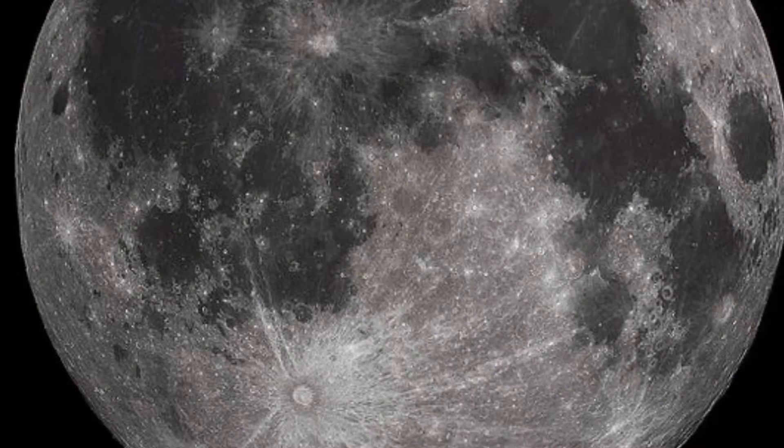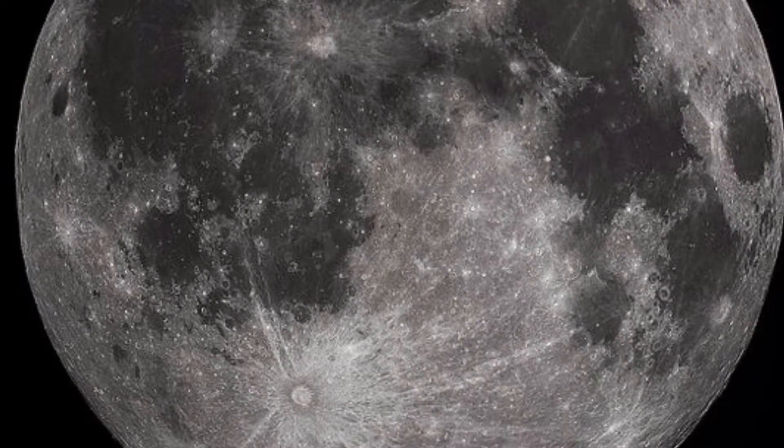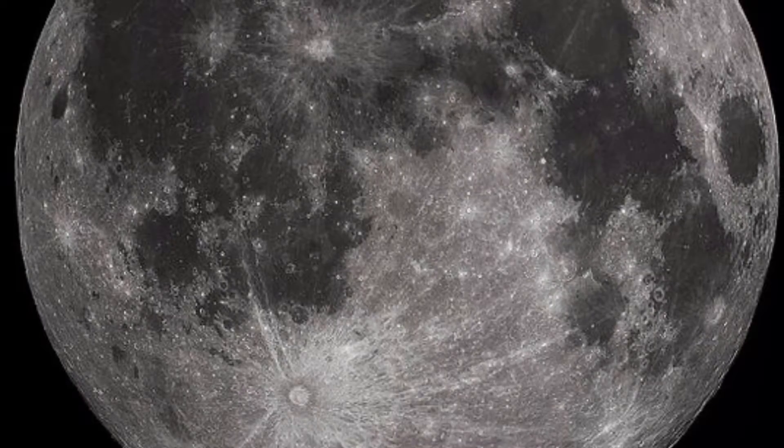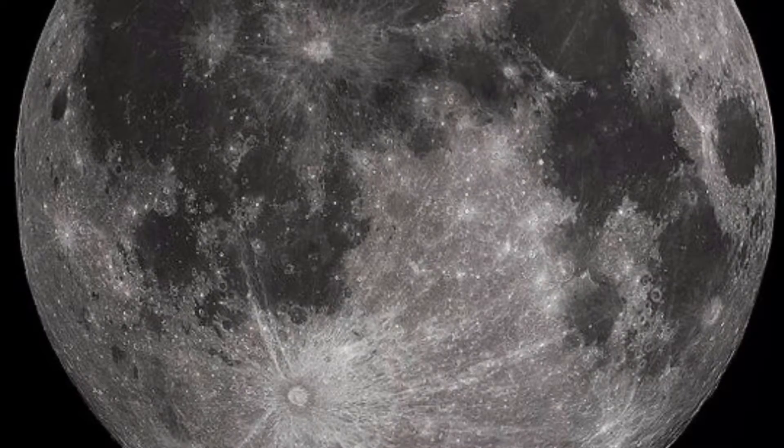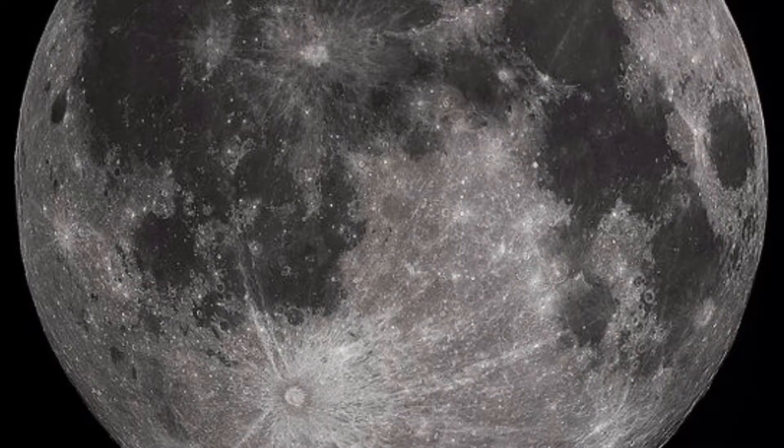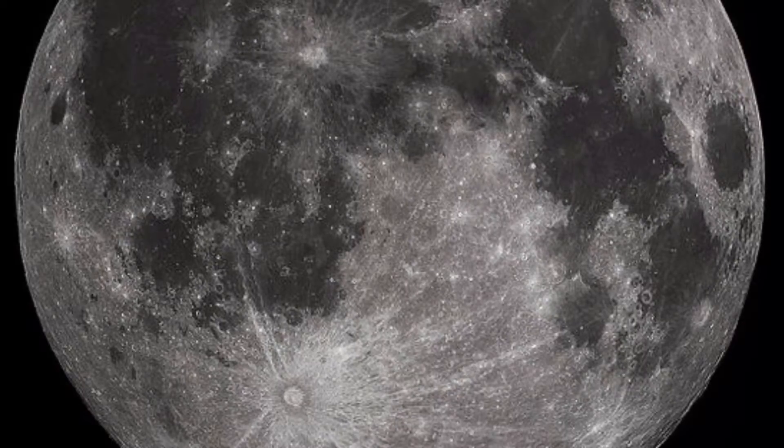Alright, so we will be talking about the Moon and the phases of the Moon. So, what is the Moon and when did it form? The Moon is an astronomical body that orbits our Earth. It is the Earth's only permanent natural satellite.